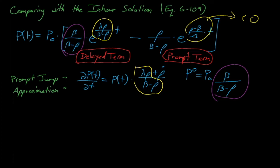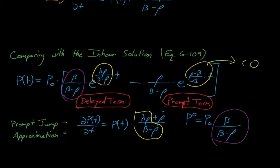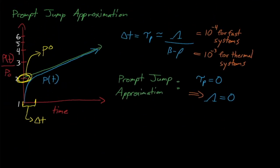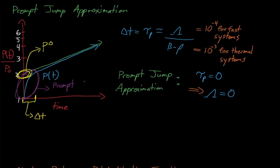It turns out that we've already seen the impact of this quickly decaying prompt term. It's responsible for that rapid prompt jump that we see at the start of a transient. So our in-hour equation does a really good job of describing our reactor's behavior during a supercritical but not prompt supercritical transient. We have one term that describes the prompt jump, which decays away quickly, and one term that represents the eventual asymptotic behavior due to delayed neutrons.